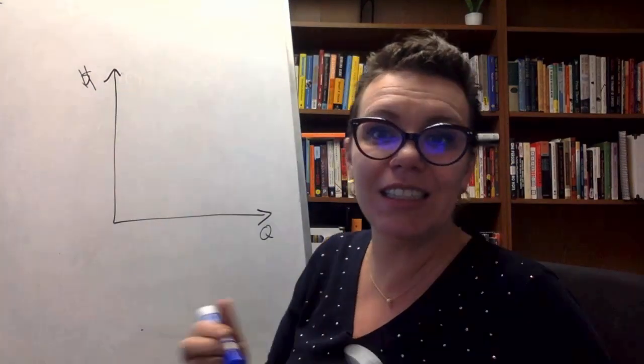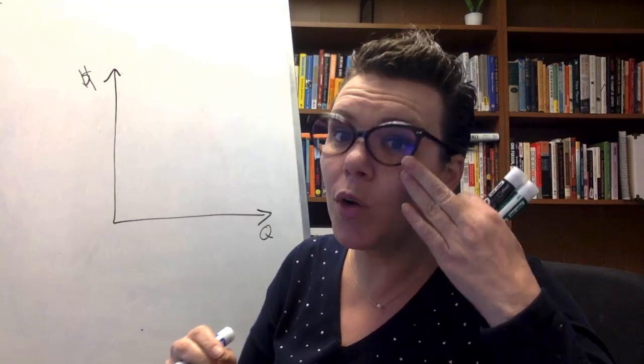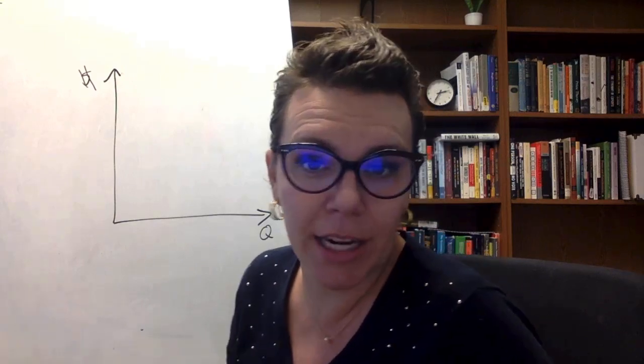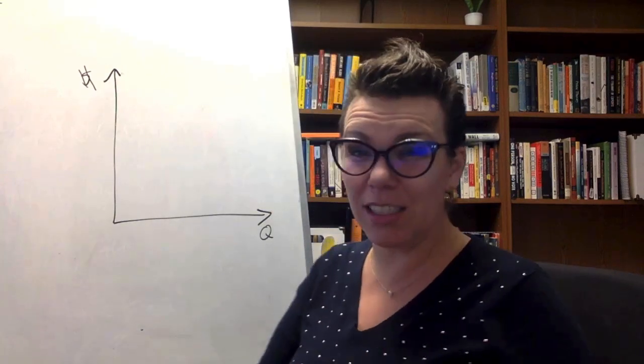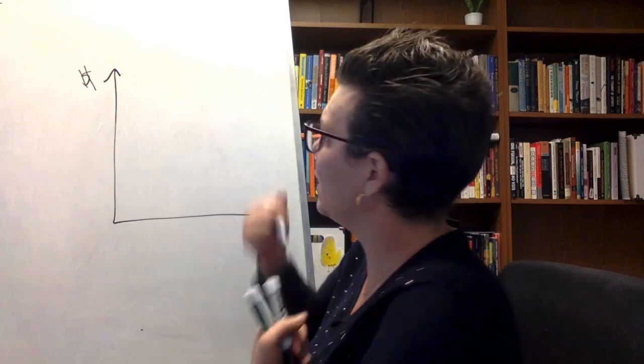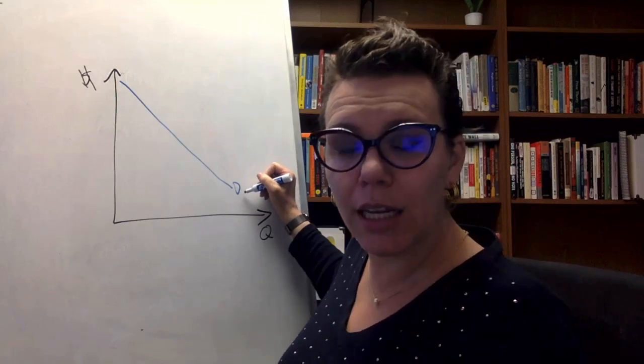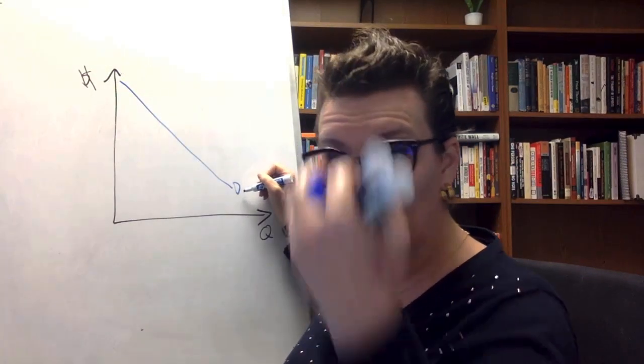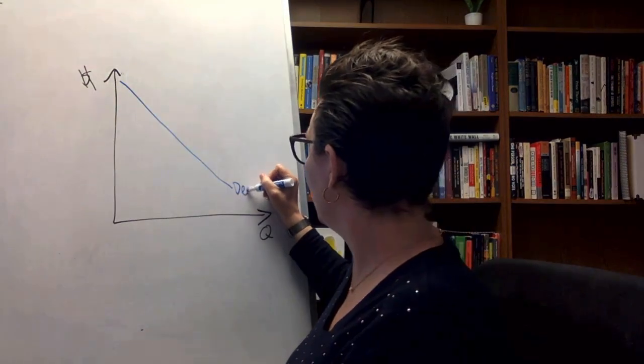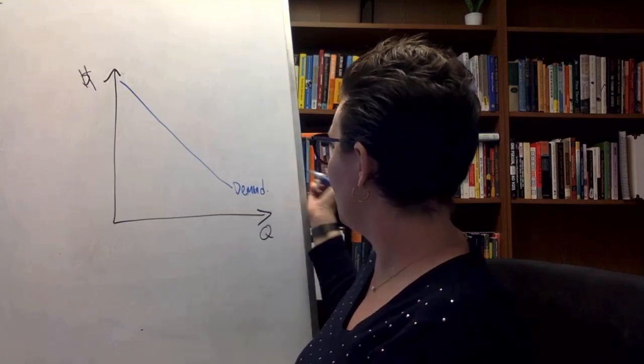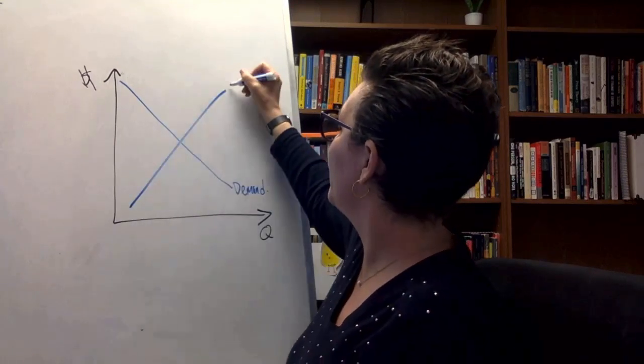So if the signaling model is true, then what you learn doesn't matter. How we produce education doesn't matter. It's just getting the signal across that somebody is high ability or high skill. So in that case, there's no positive externality because there's no benefit to society. All of the benefits accrue privately. So that would be the standard market model. So here's the demand for education and the supply.